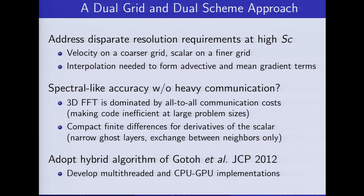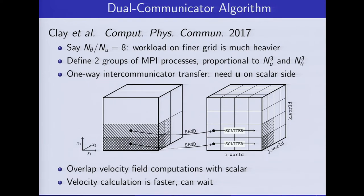We want to take this to a big computer and make it scale well. We do so-called multi-threading and have also made some progress in using graphical processor units. We have a dual communicator algorithm: these are actually the same grid physically, but we set the ratio of grid points for the scalar to the velocity to be eight. The workload on the fine grid is obviously much heavier, so we have two separate groups of processes — a smaller number takes care of the velocity field, and most processes will be working on the scalar.